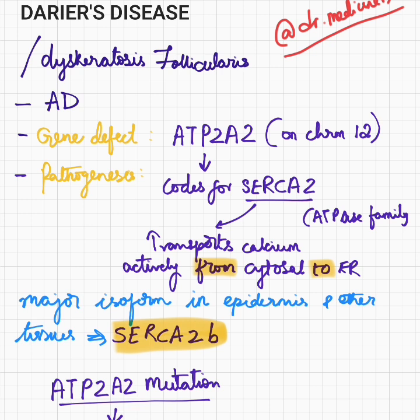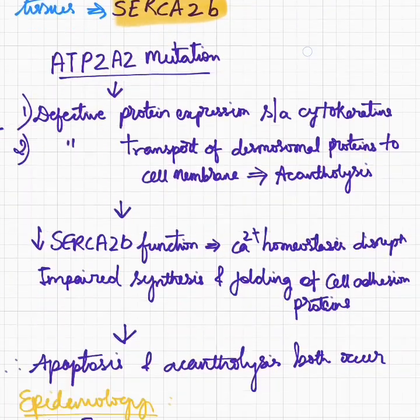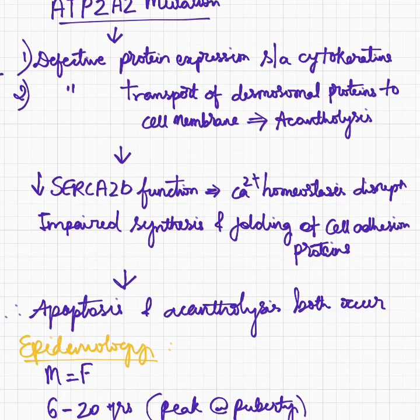The major isoform in epidermis and other tissues of SERCA is SERCA2B, and therefore as a result of this defective ATP2A2 function, the type of pump that is affected is the SERCA2B pump. Following ATP2A2 mutation, there is defective protein expression such as that of the cytokeratins, and defective transport of desmosomal proteins to the cell membrane, therefore desmosomes are not formed, leading to acantholysis.